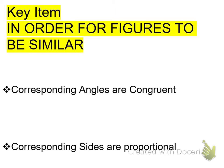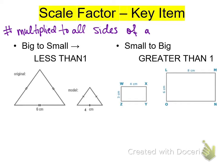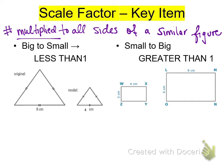Whenever you're ready, we're going to flip. If you see a key item, I would just start highlighting because this is important — scale factor, go ahead and highlight it. A scale factor is the number that is multiplied to all sides of a similar figure. So on the page before, what did we multiply to all the sides of the triangle to get the new triangle? We multiplied times 2, so 2 is the scale factor.